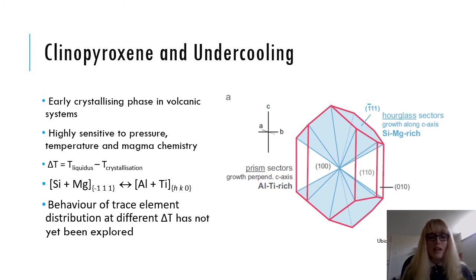The incorporation of cations in the different zones and sector zoned crystals is thought to follow the cation exchange reaction shown in the fourth dot point here. Cations of high charge, such as titanium, are incorporated into the crystal lattice sites to accommodate for the substitution of aluminium for silica in the tetrahedral site, which causes a charge deficit.